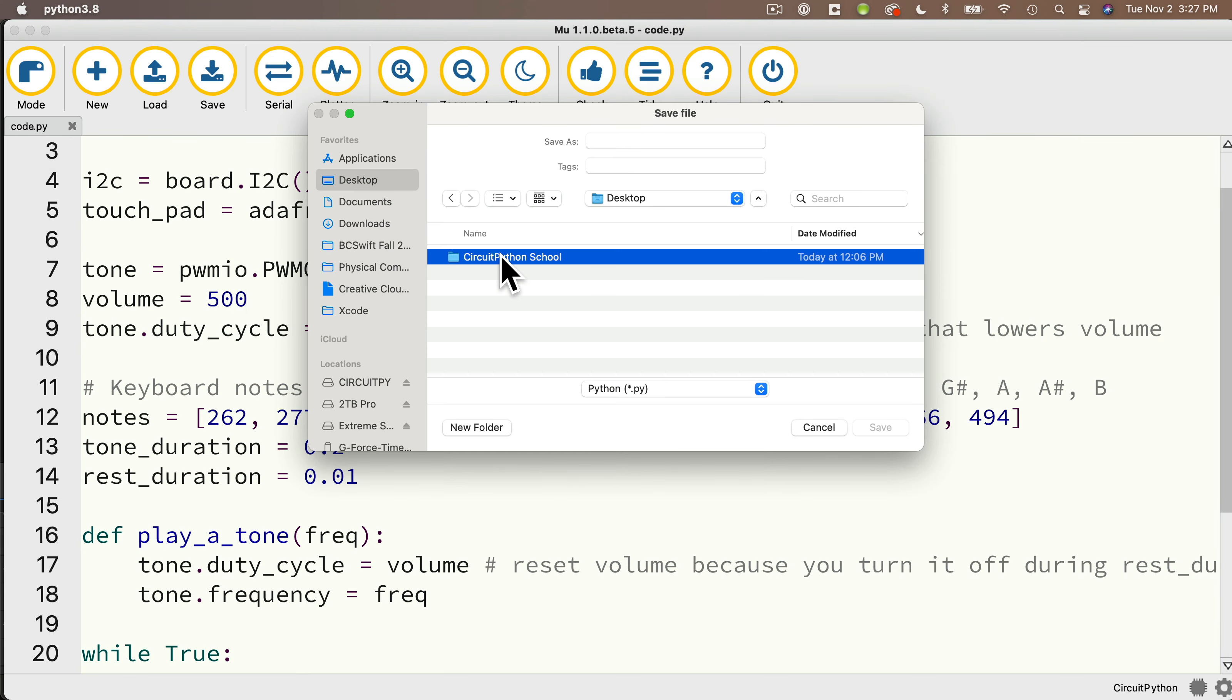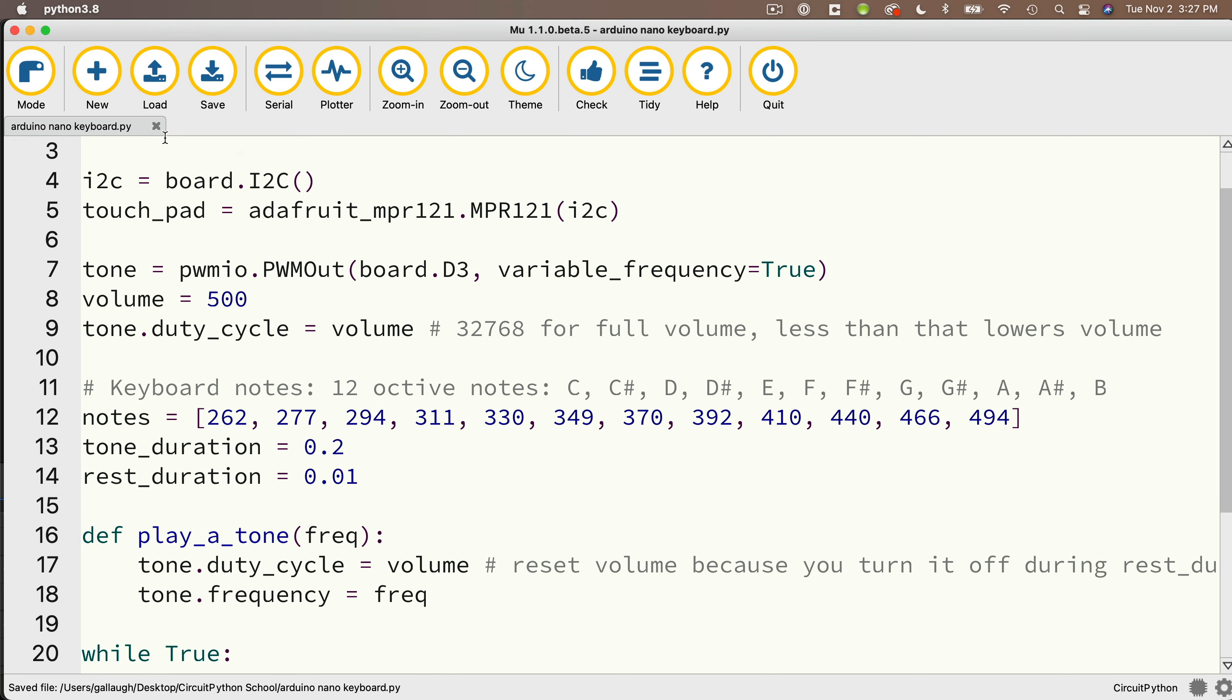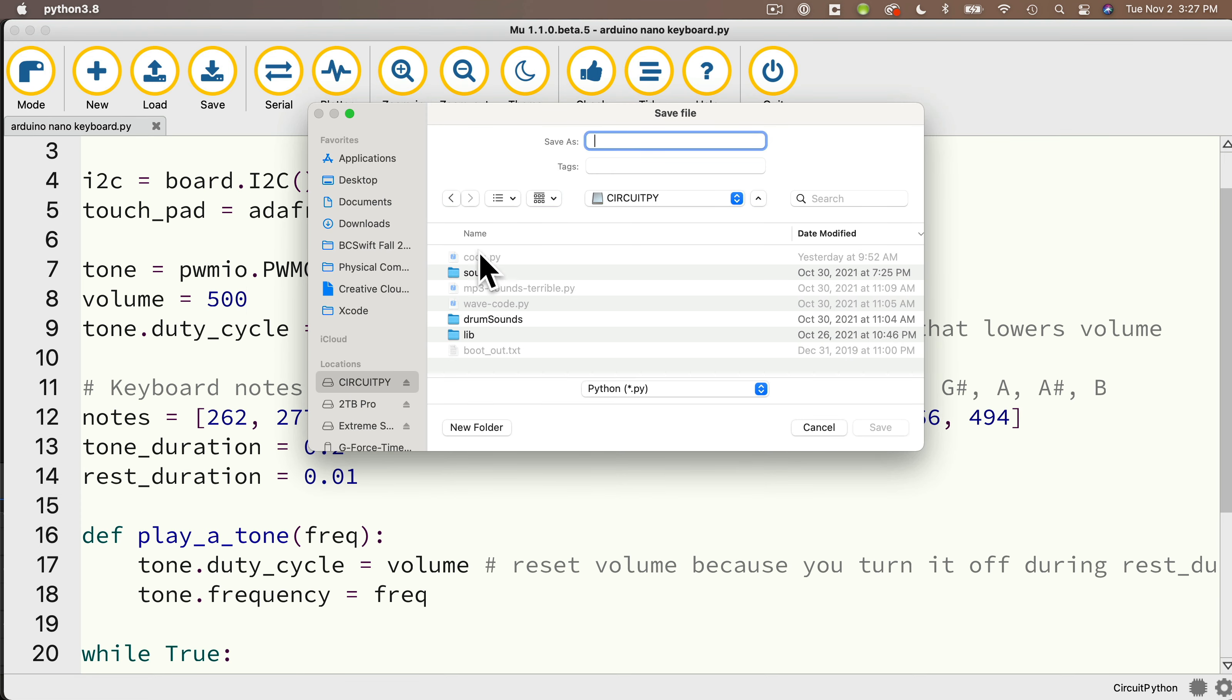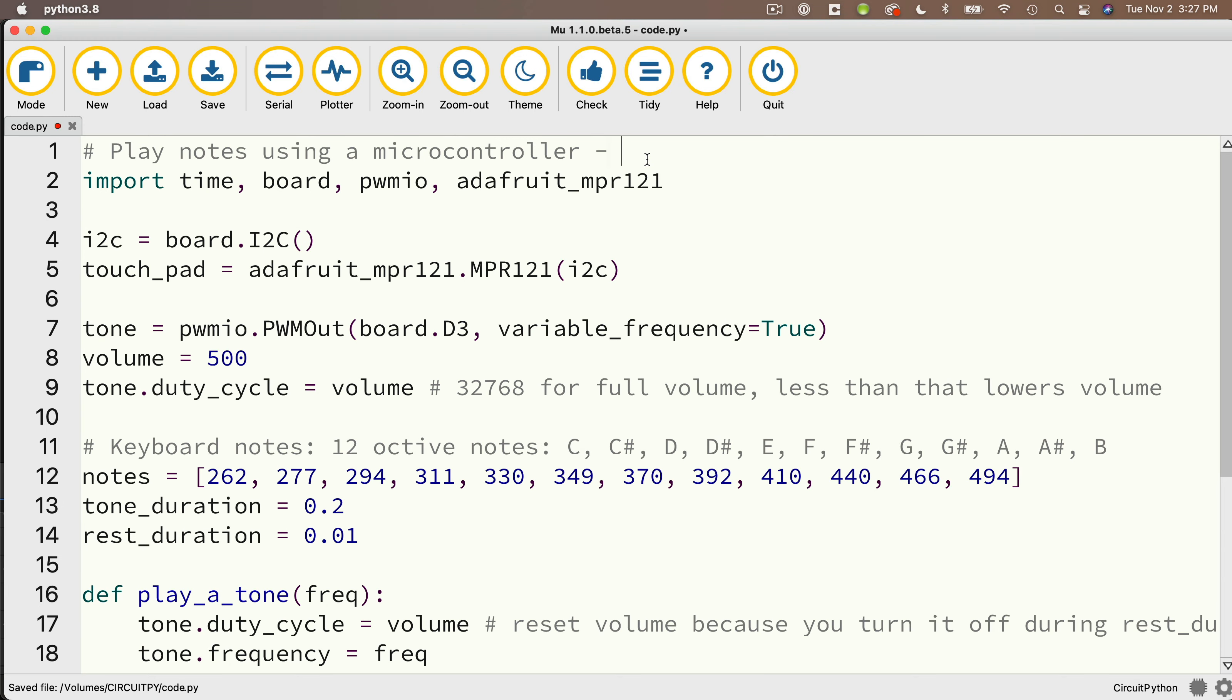Now before I run this on the CutiePie RP2040, I'm going to save this to my CircuitPython school folder. And I'm going to call this Arduino Nano keyboard just that I remember what this file is. Then I've just plugged in my CutiePie. So I'm going to save this file to the CutiePie as code.py. And I'm just going to put a note up here that says CutiePie RP2040. And the code's going to work the exact same way. But we do have to change how we set up I squared C. And we're using a different pin for our speaker output. So first, where we set up the PWM out, we're going to change board.D3 to board.A0, because I've plugged the tip of my speaker jack to pin A0.